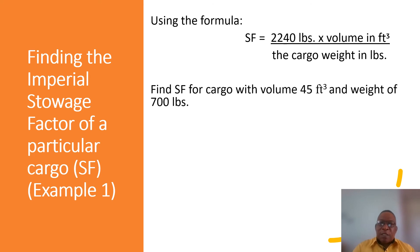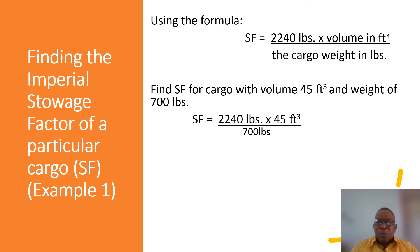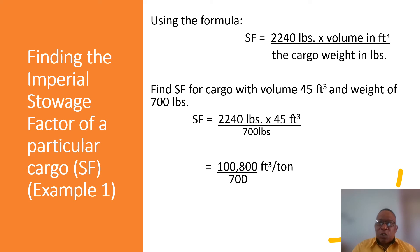Let's use the following information to determine the imperial storage factor of this cargo. We have a volume of 45 cubic feet and a weight of 700 pounds. Plugging into the formula: 2240 lbs × 45 ft³ ÷ 700 lbs gives us 100,800 divided by 700, resulting in 144 cubic feet per ton.